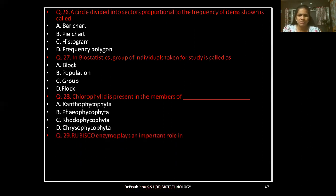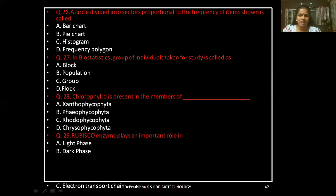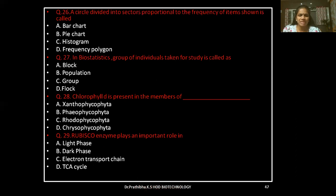Question 29: Rubisco enzyme plays an important role in — light phase, dark phase, electron transport chain, or TCA cycle. Keep your answers ready.